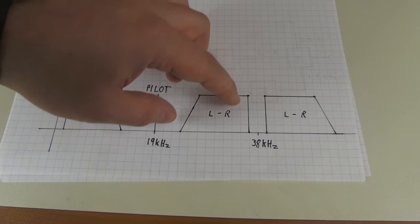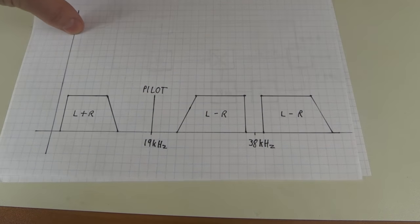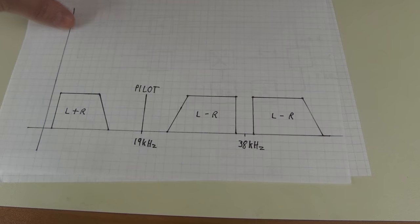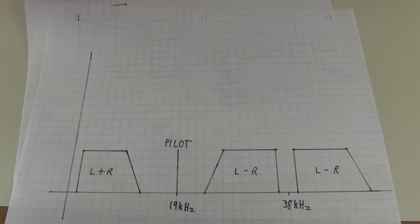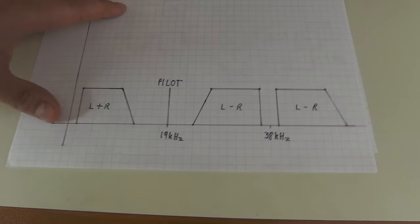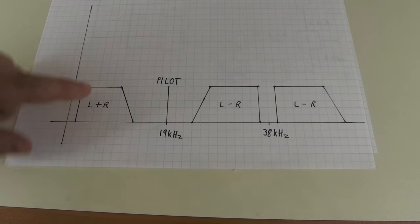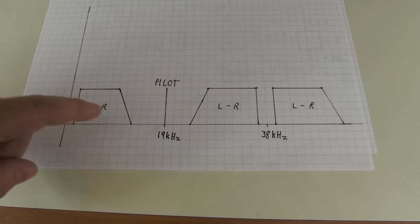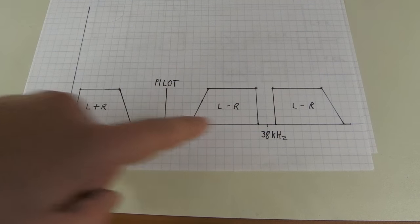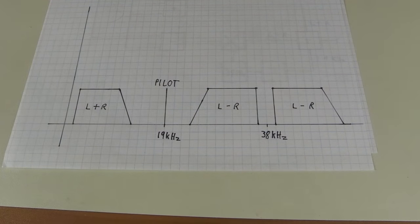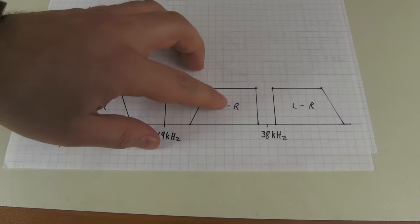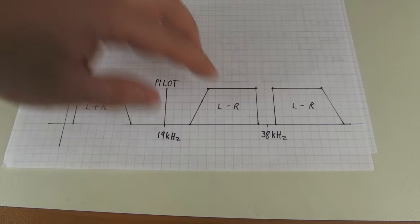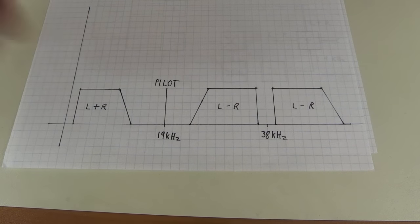And why is that important or how do you recover left and right from that? Well, this is quite obvious. If you add the sum and the difference signal, so if you have left plus right plus the left minus right, what trickles out is just the left channel. The plus right plus minus right will cancel each other out and you're left with the left channel.